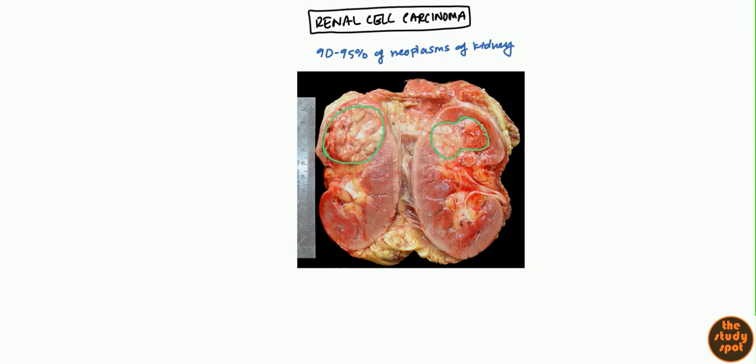However, on microscopic histology, it is associated with the proximal renal tubular epithelium. So that's where the tumor arises from, from that epithelial type of cells over there.